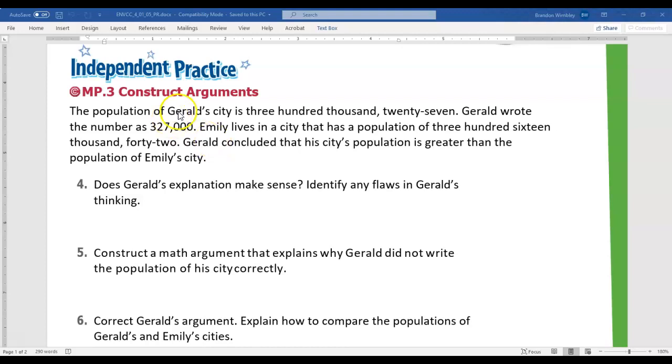So our first one says the population of Gerald City is 300,027. Gerald wrote that number as this. Emily lives in a city that has a population of 316,042. Gerald concluded that his city's population is greater than the population of Emily City. Does Gerald's explanation make sense?